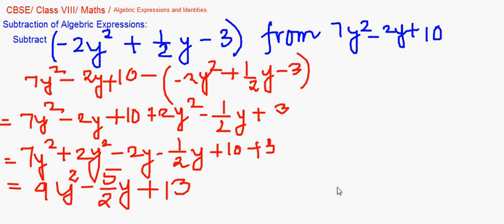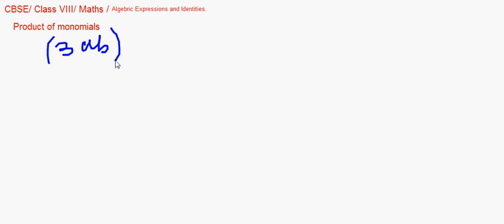Now we move on to multiplying or finding the product of expressions. In multiplying expressions, we first take up monomials. I will write here: product of monomials. Suppose I take a couple of examples — so 3ab is a monomial, multiplied by 5b. Multiply the constants and the variables and find the answer; you can apply index laws here.